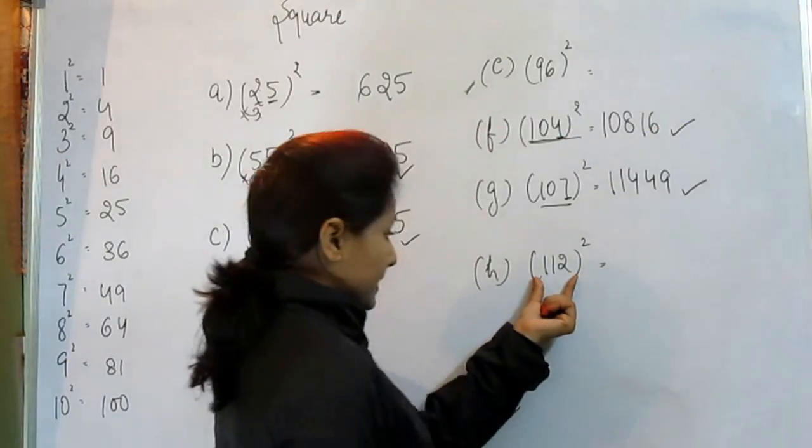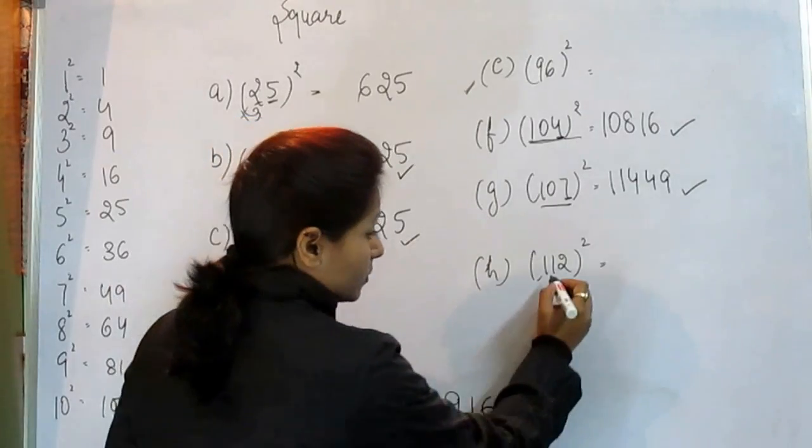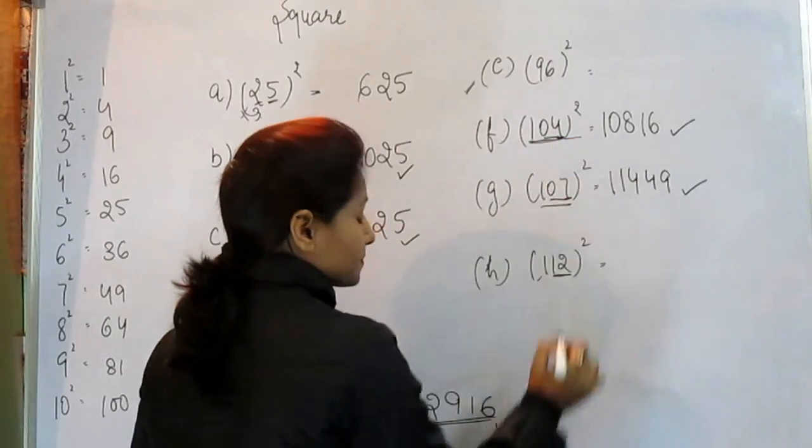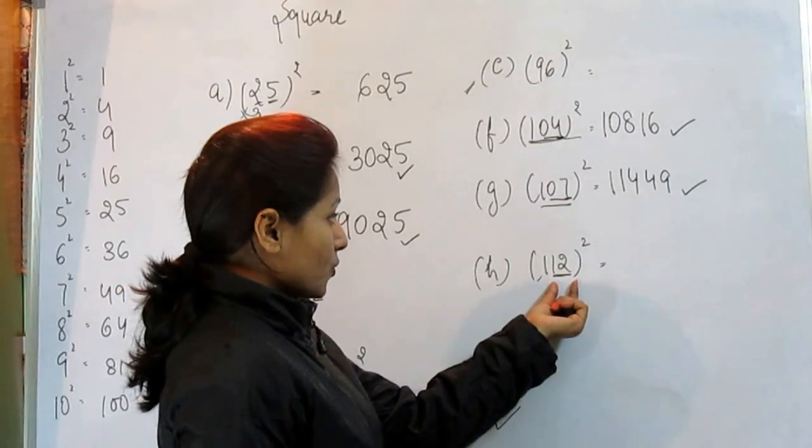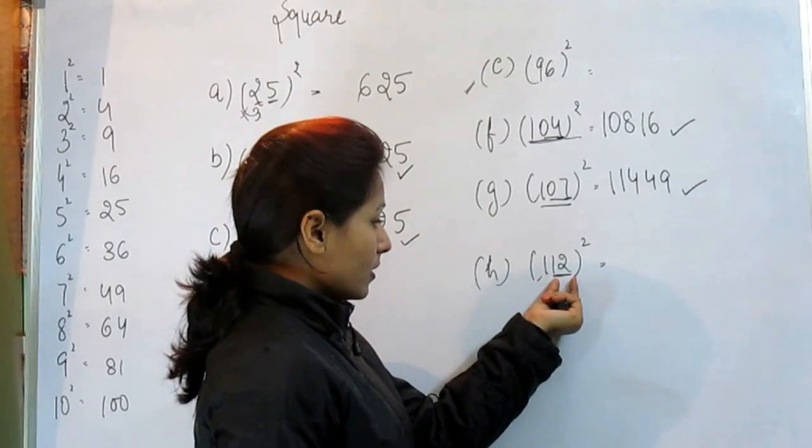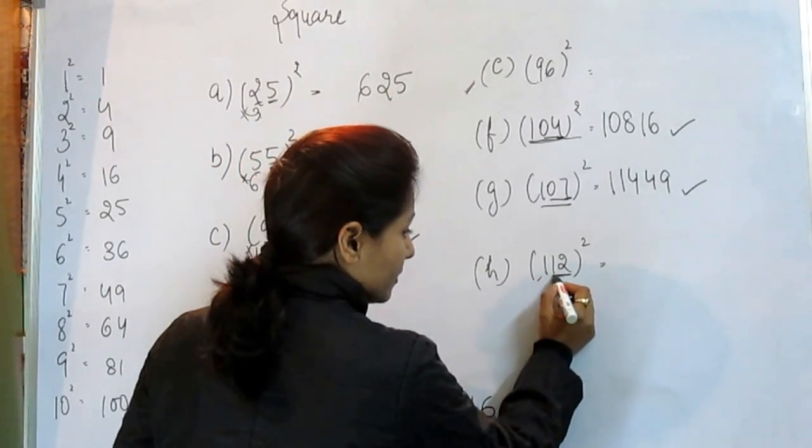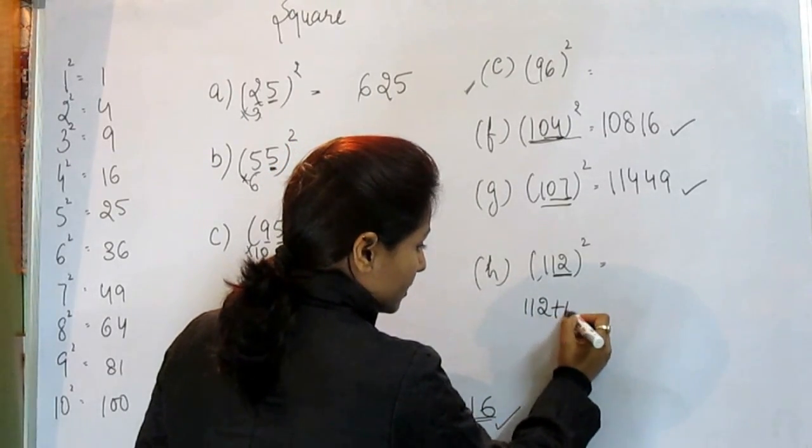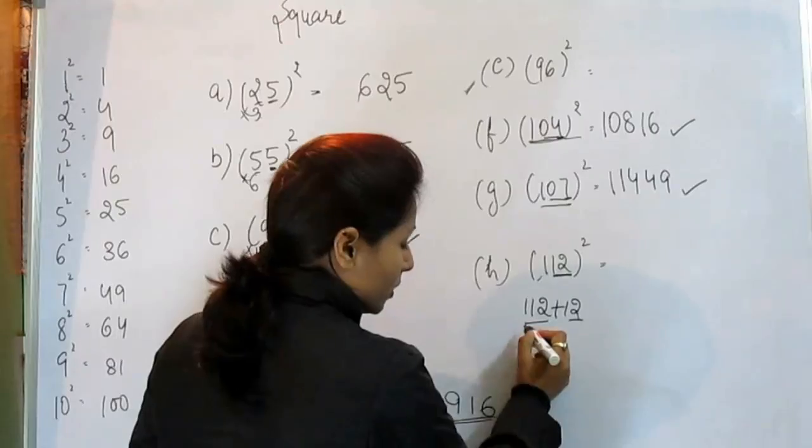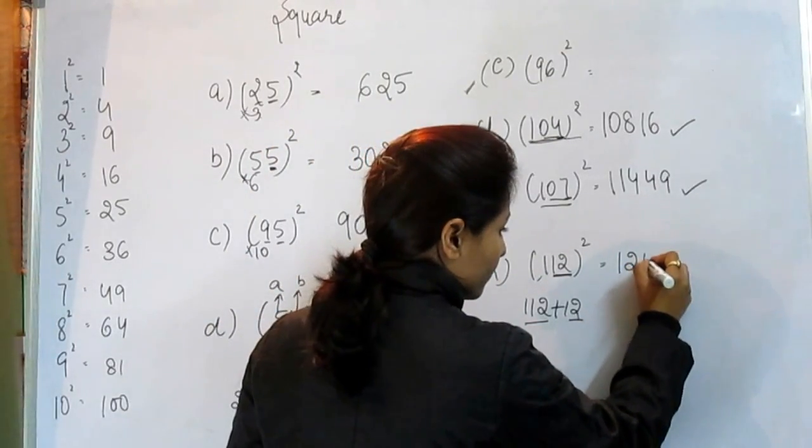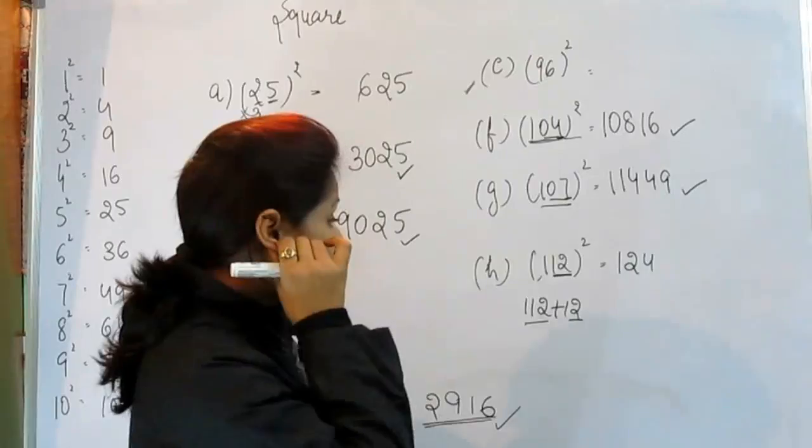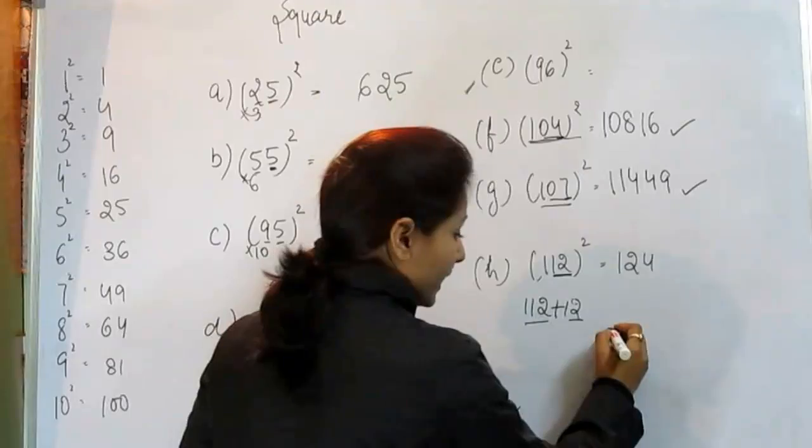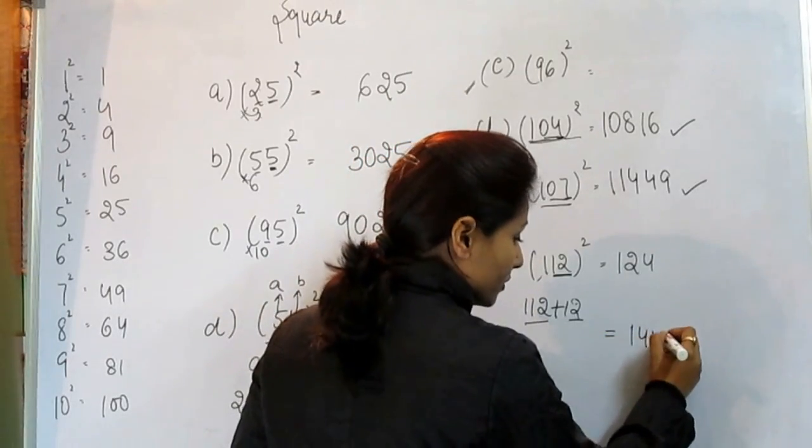Now, this case. Take the last number, this 12. When we add this 12 to the whole number, we get 124. And what is the square of 12? That is 144.